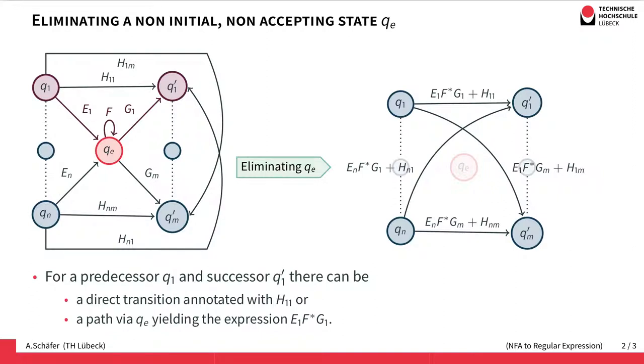It's possible to go from Q1 via E1 to QE, then take the transition F to stay in QE, and then take the transition G1 to go to Q1'.